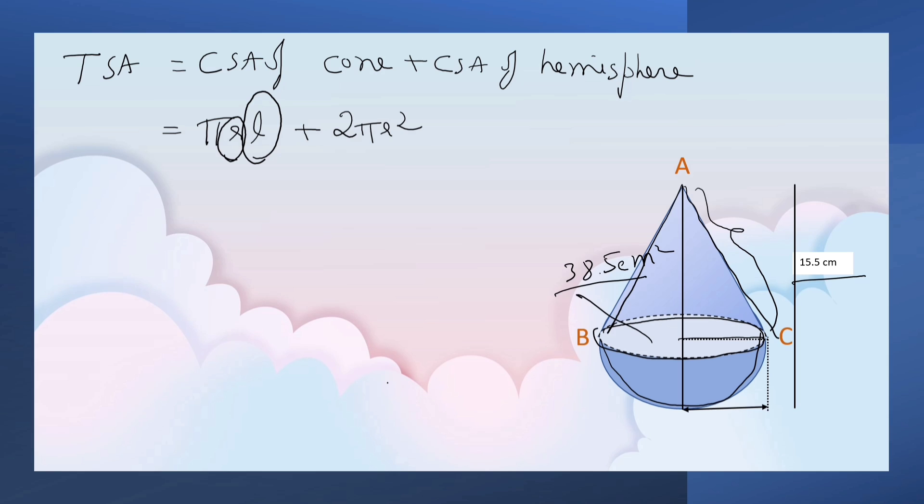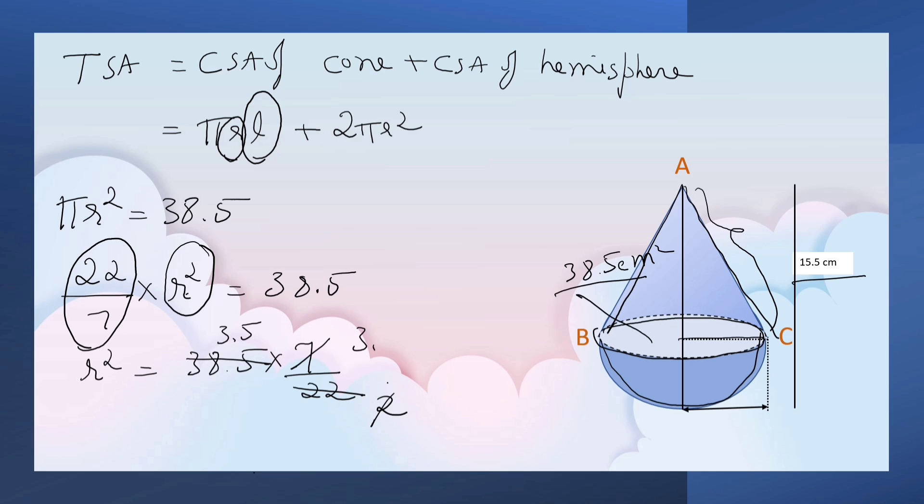By using the area of the base of the cone, we can find radius. That means πr² equals 38.5 cm². π is 22 by 7, r² equals 38.5 divided by 22/7. So r² equals 3.5 times 3.5, radius is equal to 3.5 cm. This is also 3.5 cm.